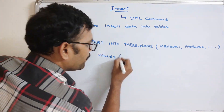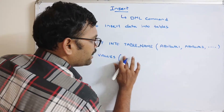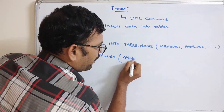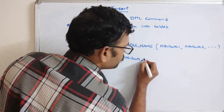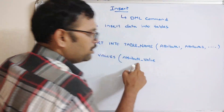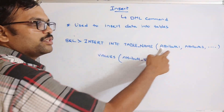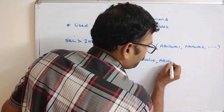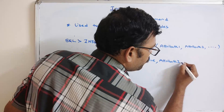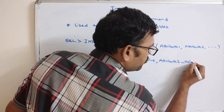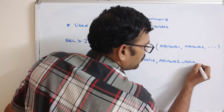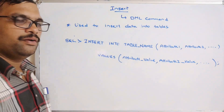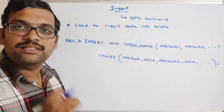Then use the VALUES keyword and provide the corresponding values — the value for attribute one, then the value for attribute two, and so on. This is the command used to insert a single row with specific attributes.